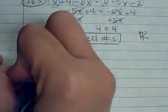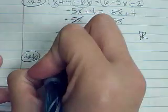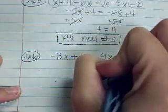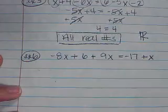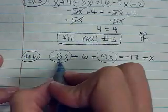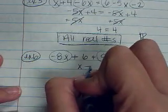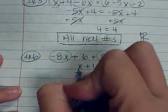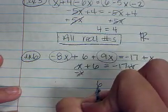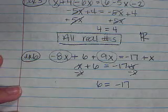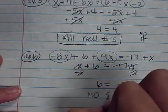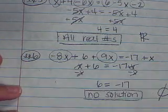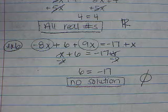Let's look at one last example of another special case. Example number 6: negative 8x plus 6 plus 9x equals negative 17 plus x. I'm going to combine my like terms. Negative 8x and 9x makes x plus 6 equals negative 17 plus x. When I subtract x from both sides, you will see that 6 equals negative 17. Because that is not true, the answer is no solution. The shorthand for that is to do this symbol right there. If you have any questions, please come see me in class.